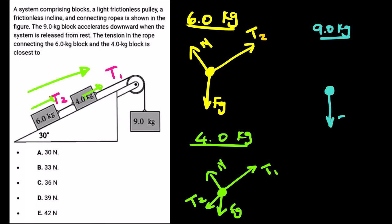For the 9.0 kg block, we simply have FG and T1. We should know that the system moves downward for the 9.0 kg block, meaning that we take this direction as positive and the opposite direction as negative. Since the system is moving in this direction for both of the incline objects, we will take that direction as positive and the opposite as negative.